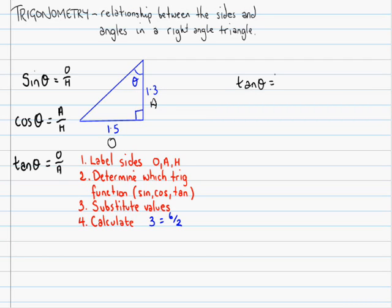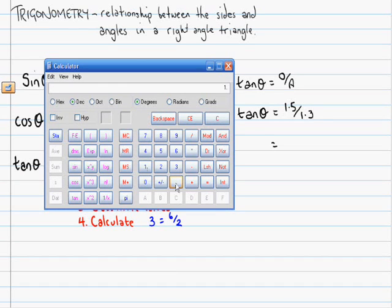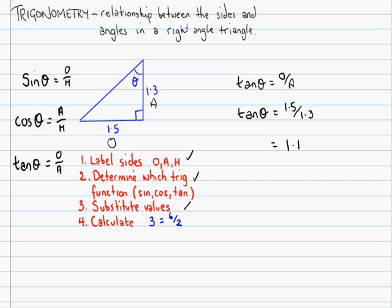Tan theta equals the opposite over the adjacent. Hey, look. I've just done that step, that step, and now I'm about to do this step. I'll substitute the values. Tan theta equals the opposite, which is 1.5 over 1.3 equals. Now, the way to work this out is I get my calculator. 1.5 divided by 1.3 equals. I get this answer of 1.15. I'll just write down here, 1.15.